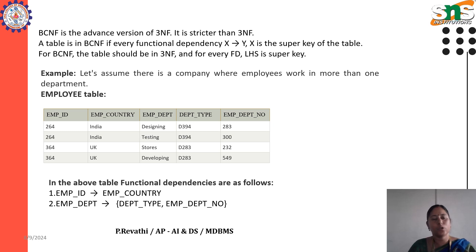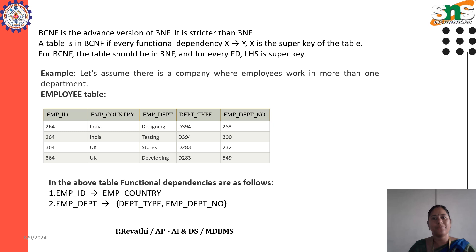Boyce-Codd Normal Form is the advanced version of the third normal form. It is stricter than the third normal form. A table is in Boyce-Codd Normal Form if every functional dependency X determines Y, where X is the super key of the table.